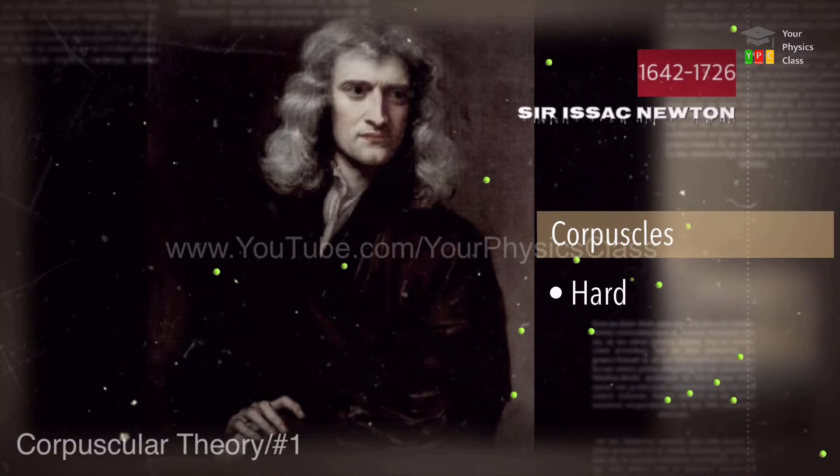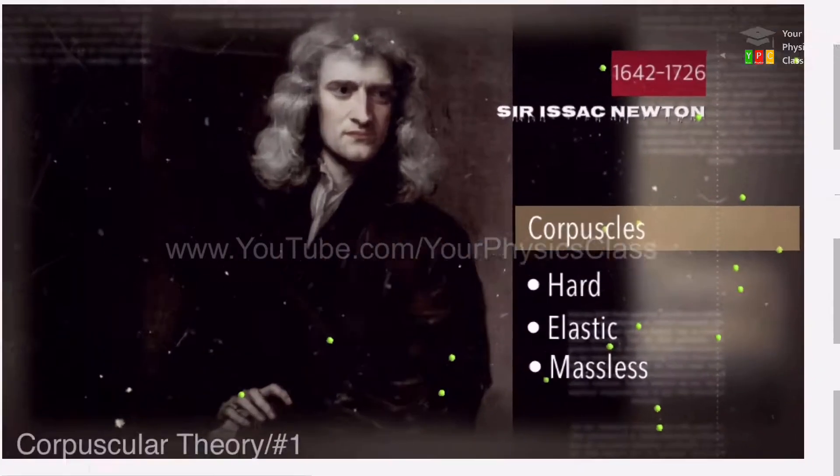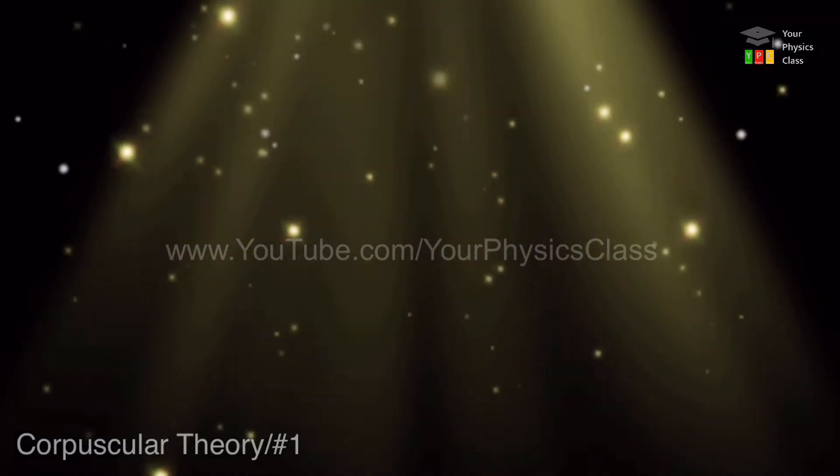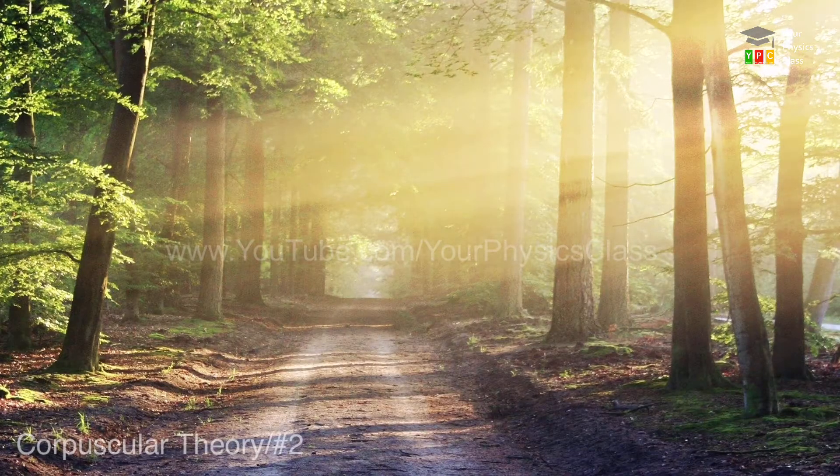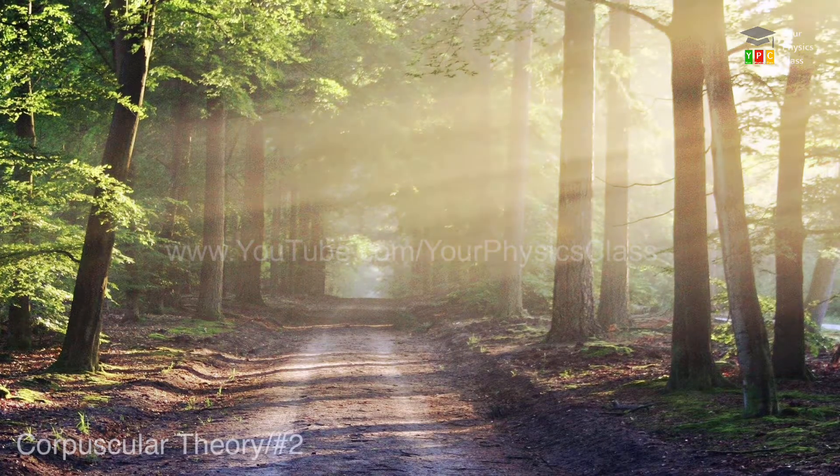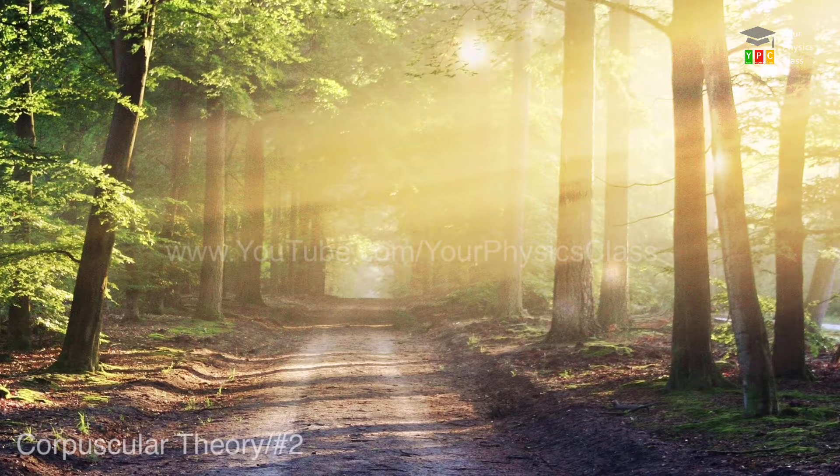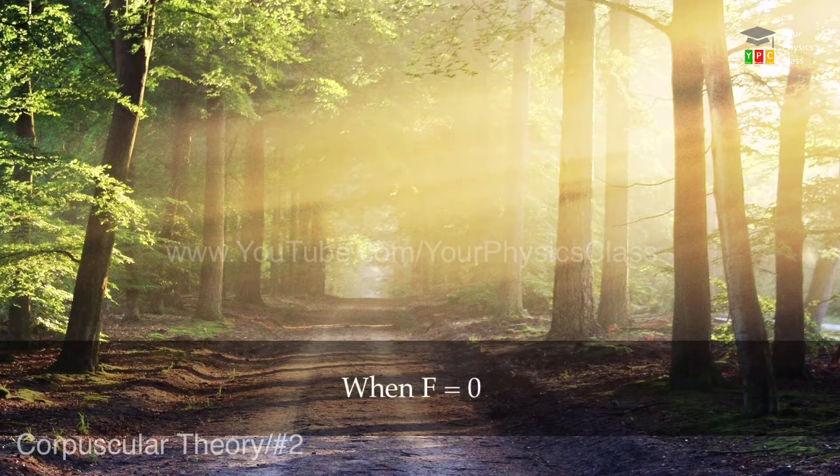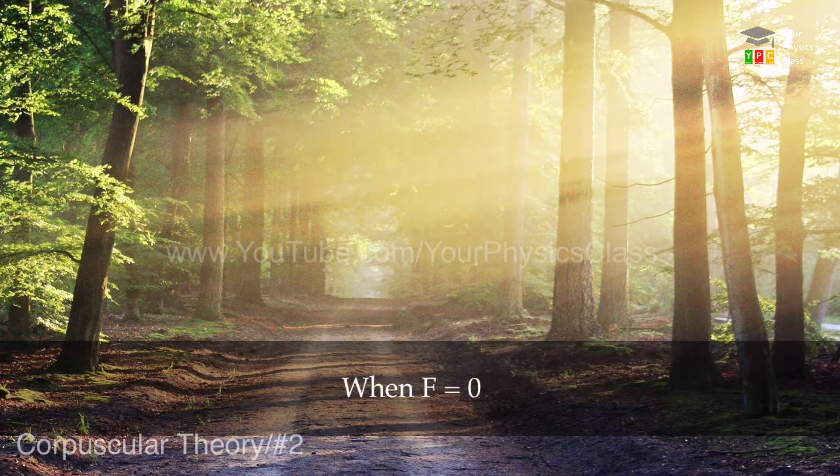According to Newton, light is made of small particles called prakashkano, which travels along straight line in the absence of any external force. When source of light is there, these particles travel in straight line.